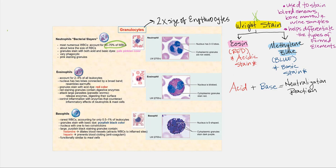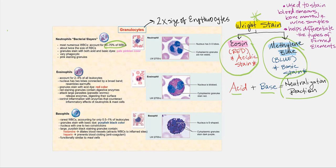The Wright stain is used to stain blood smears, bone marrow samples, and urine samples to differentiate formed elements. This stain consists of eosin — a red acidic stain — plus methylene blue, a blue basic stain. Combining an acid and a base results in a neutralization reaction. Because neutrophils take up both eosin and methylene blue, this results in a pinkish color in the cytoplasm, which is why they are referred to as neutrophils — neutrophils for neutralization.